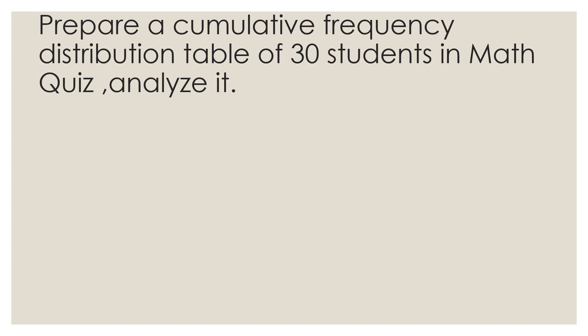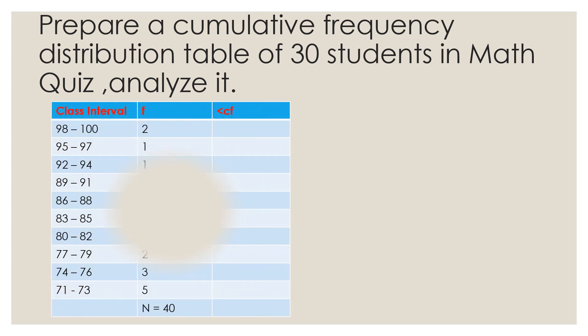Let us prepare a cumulative frequency distribution table for 30 students in a math quiz and then analyze it. The highest score is 100 and the lowest is 71. Getting the less than cumulative frequency starting from the lowest: 5; 5 plus 3 equals 8; 8 plus 2 equals 10; 10 plus 9 equals 19; 19 plus 5 equals 24; 24 plus 6 equals 30; 30 plus 6 equals 36; 36 plus 1 equals 37; 37 plus 1 equals 38.